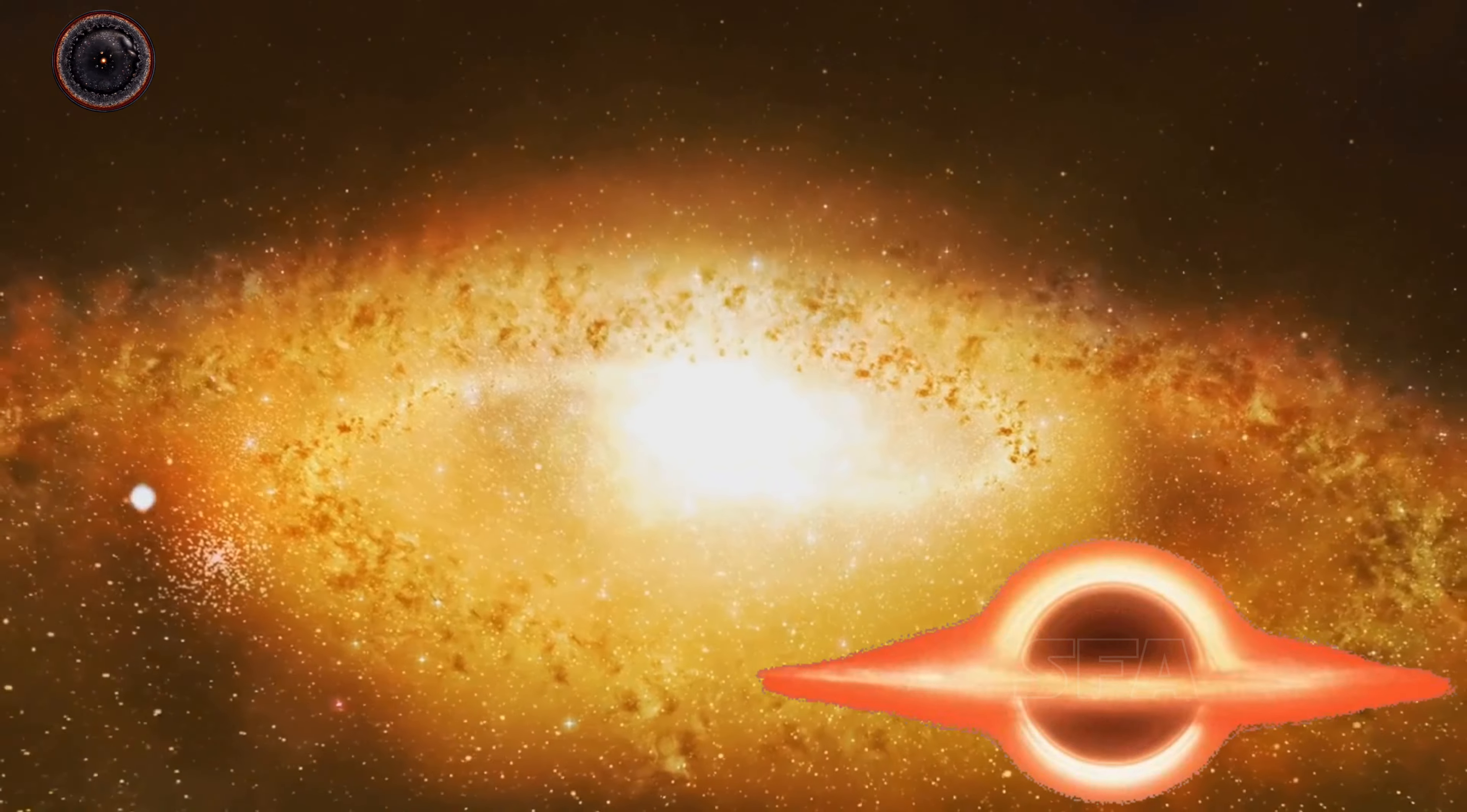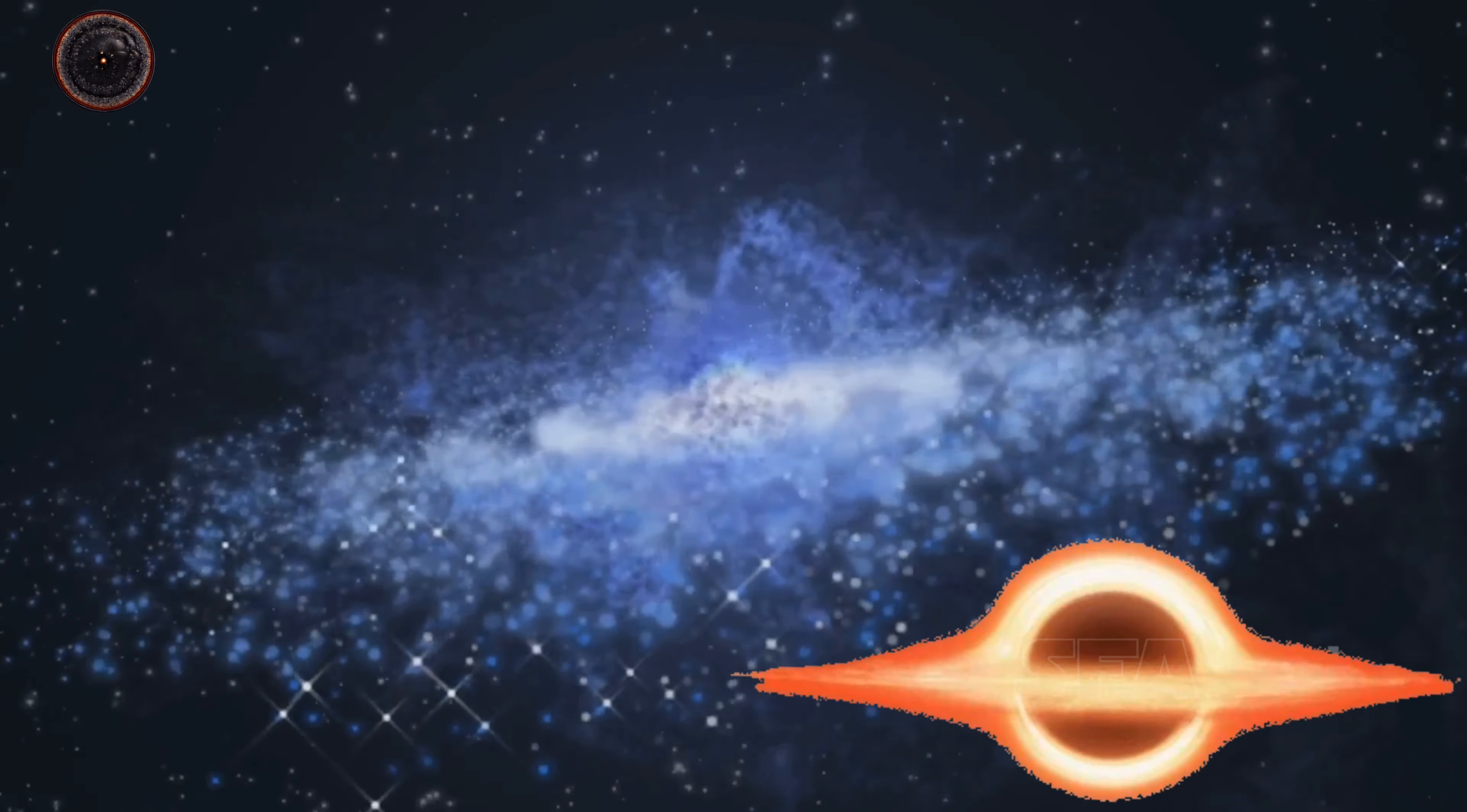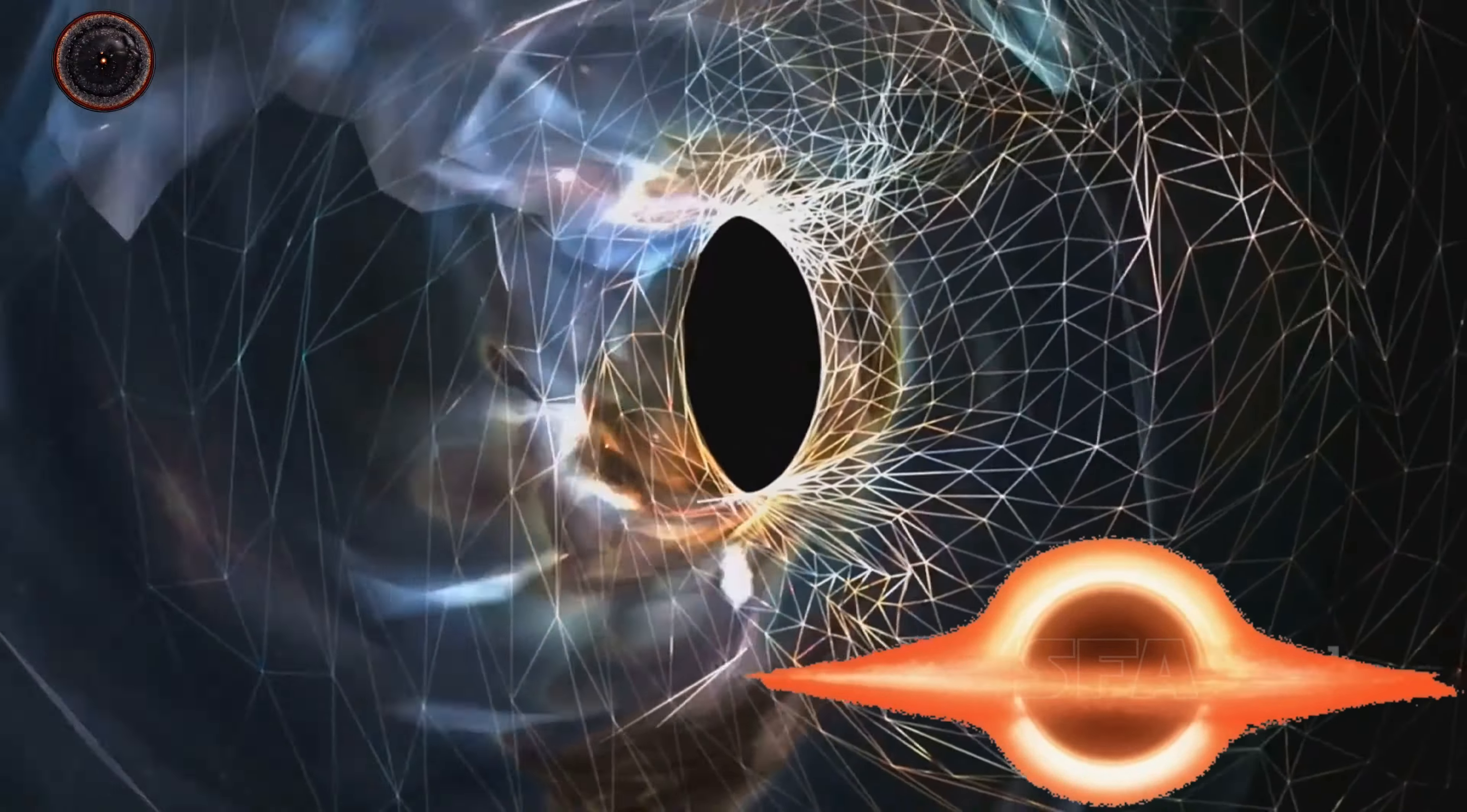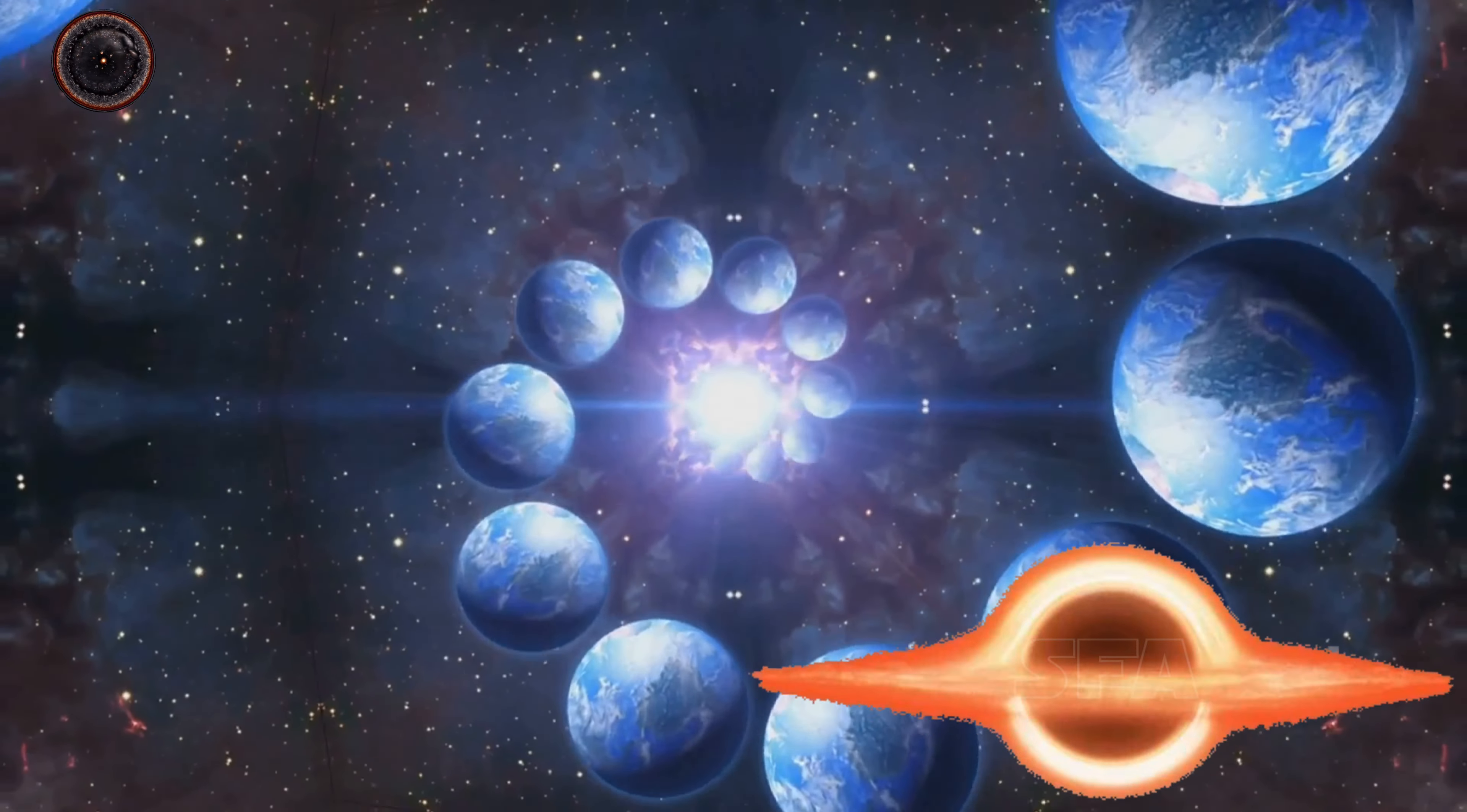But here's the twist. The universe is expanding. So even as light from distant galaxies travels towards us, those galaxies are moving further away. Some are even receding faster than their light can reach us, effectively moving beyond our observable universe. Yet the expansion of the universe doesn't mean our observable universe is getting bigger. It's limited by the speed of light and the age of the universe. We can only see as far back as the light that has had time to reach us, which takes us to about 400,000 years after the Big Bang, the era known as the cosmic microwave background. So while the universe continues to expand, our window to observe it remains bound by the laws of physics.